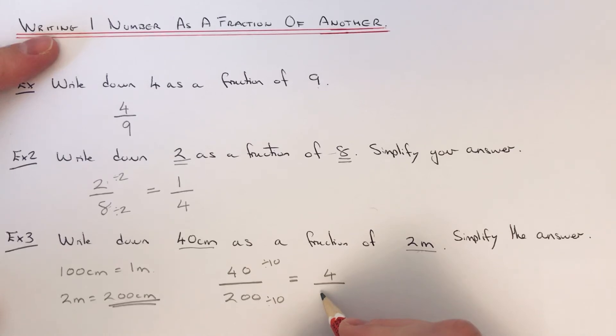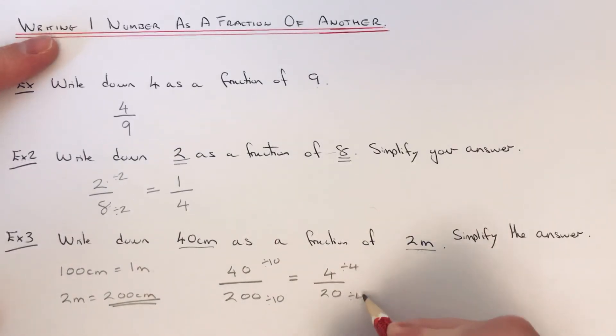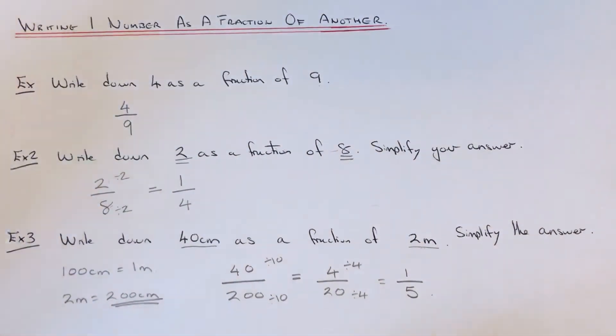Then we can divide by 4 because both numbers are in the 4 times table. 4 divided by 4 is 1, 20 divided by 4 is 5. So our final answer is one fifth.